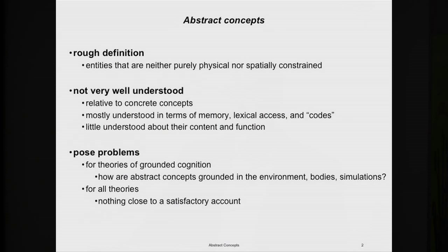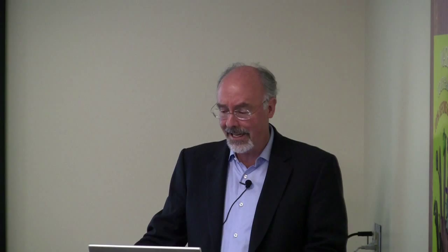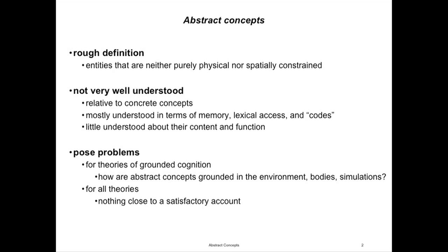An abstract concept is a concept that refers to entities that aren't completely physical nor spatially constrained. So a chair is largely physical and spatially constrained, whereas something like truth is much more amorphous. These kinds of concepts are not very well understood, especially relative to concrete concepts like chair and hammer, which are the kinds of concepts most frequently studied, presumably because they're the easiest to study.